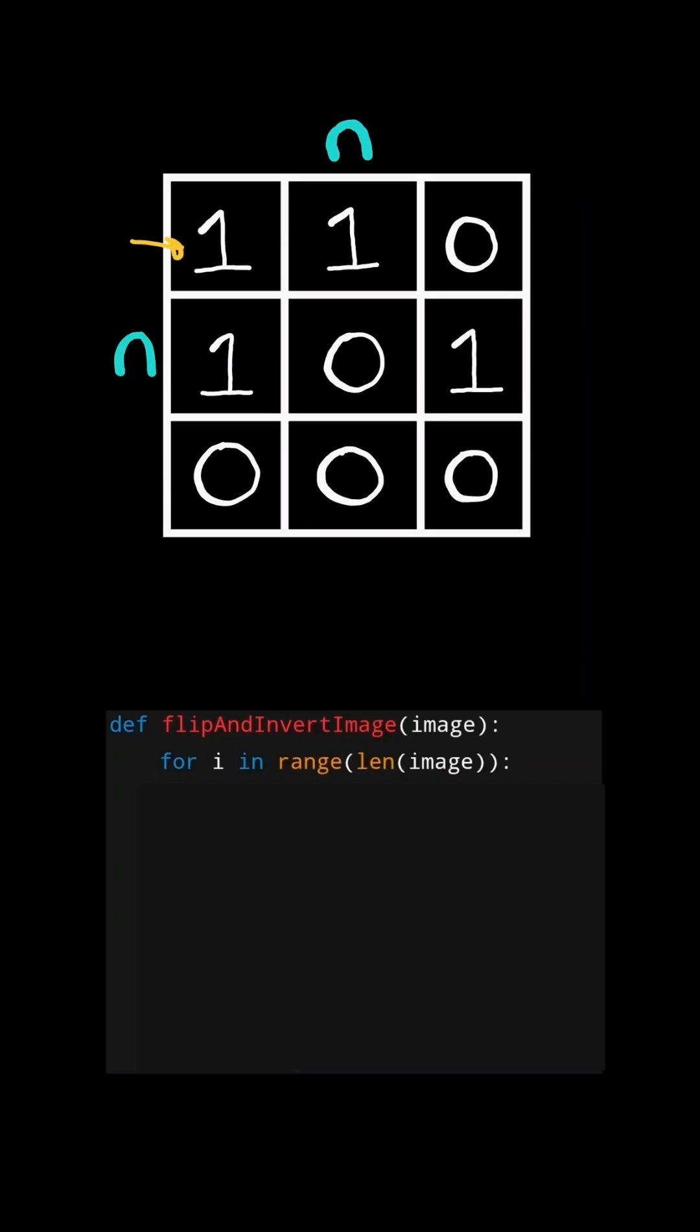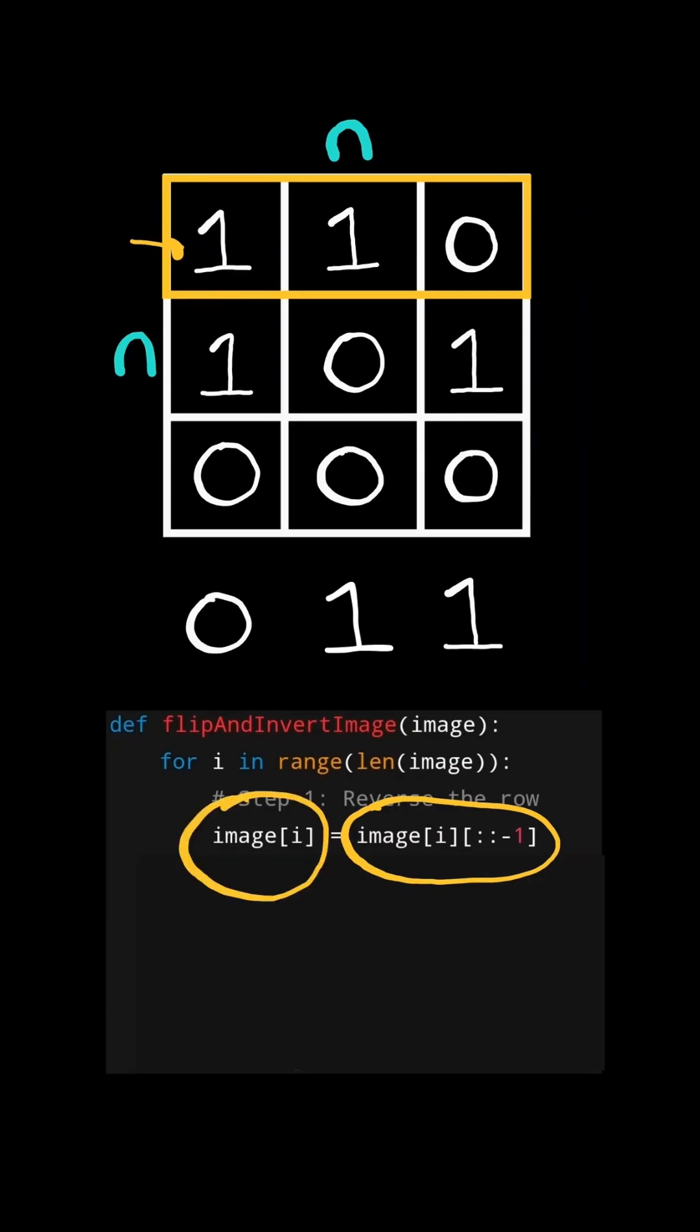First, we want to iterate through each row in the matrix. And we want to first reverse the row. We can slice the row by creating a reverse copy of the row. In Python, we can create a reverse copy of the row by slicing it. And then we want to update the row to the new row.